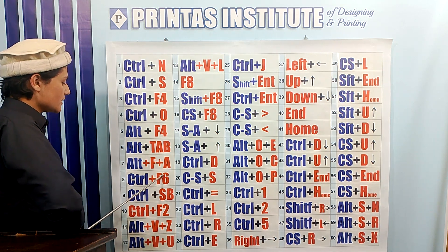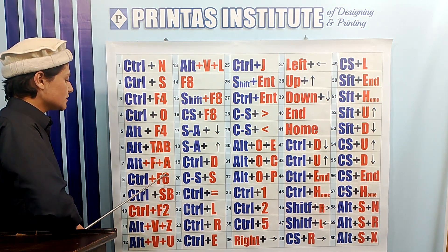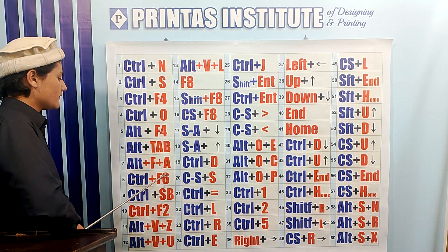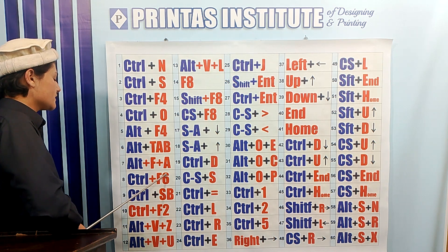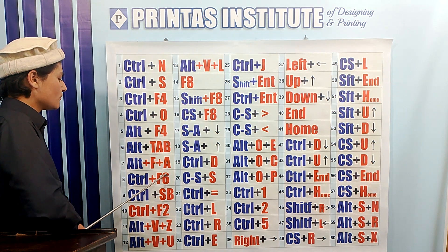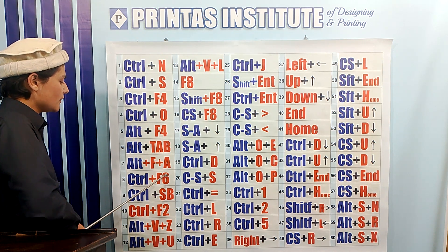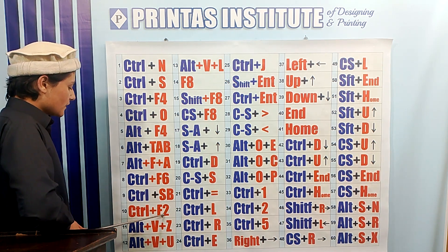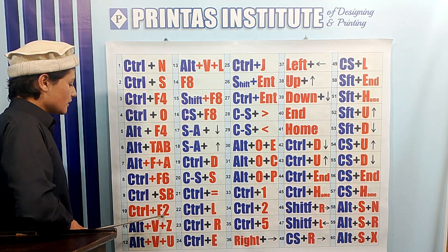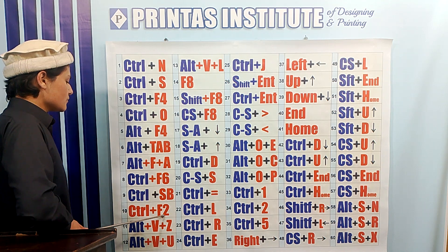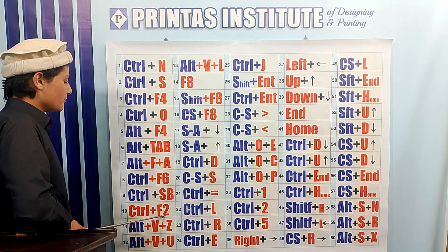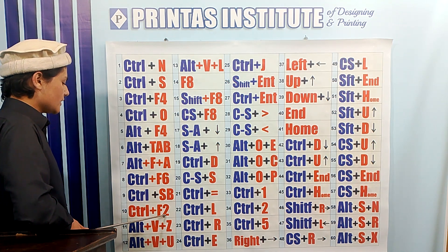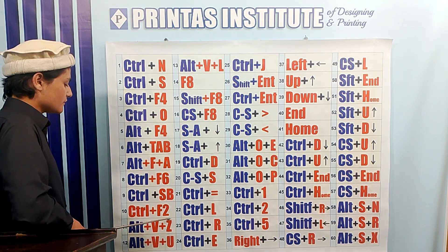Ctrl F6 is the command which is used to toggle between different files — we can change from file 1 to file 2. Ctrl F2 is used to see the print preview of the file which we have made in MS Word.